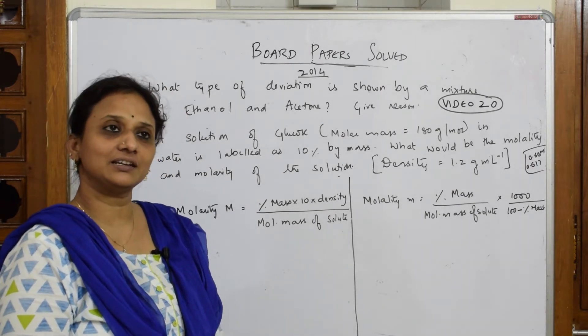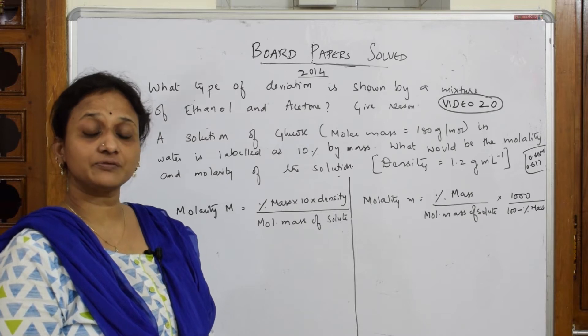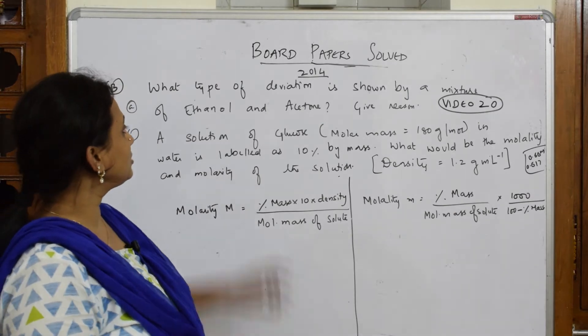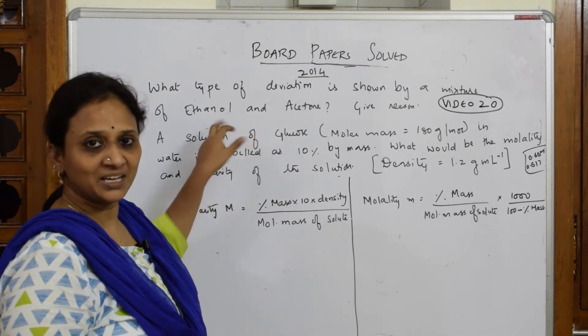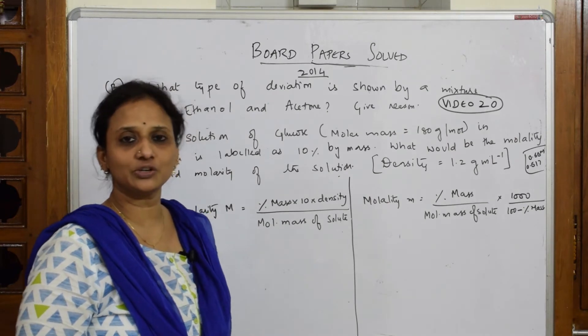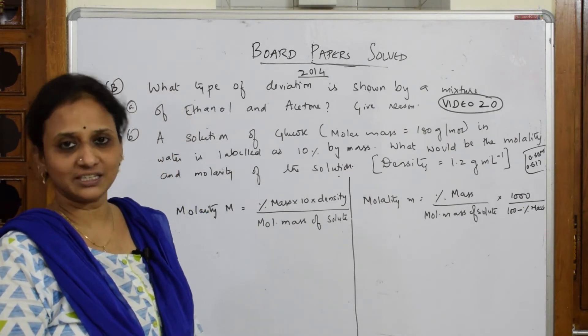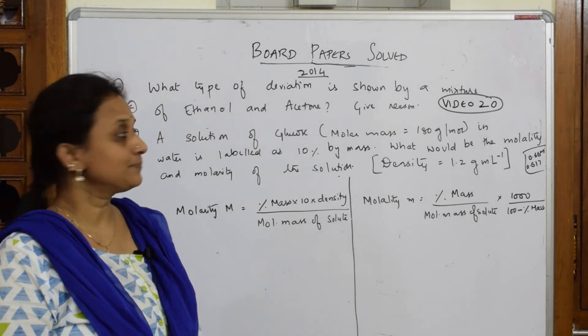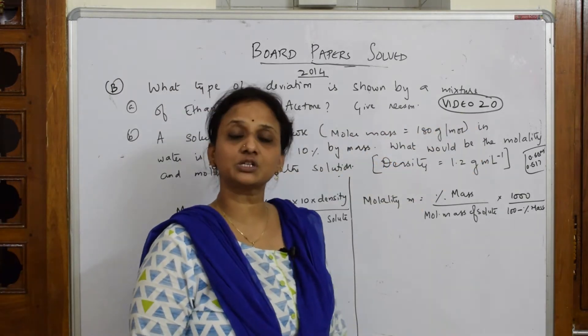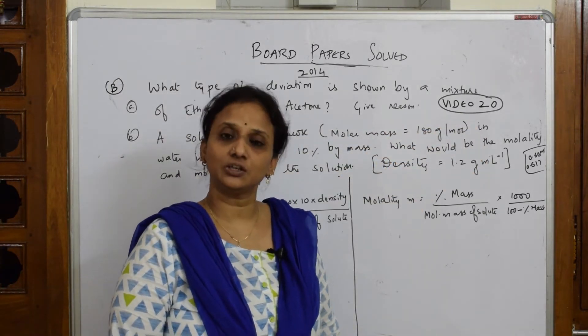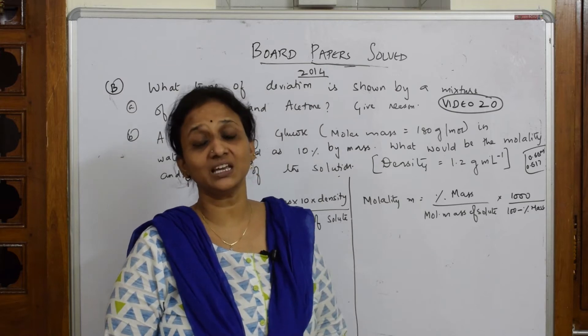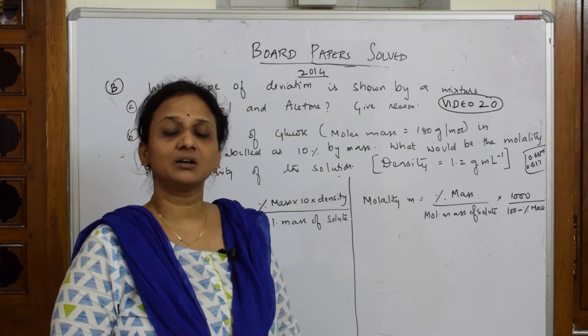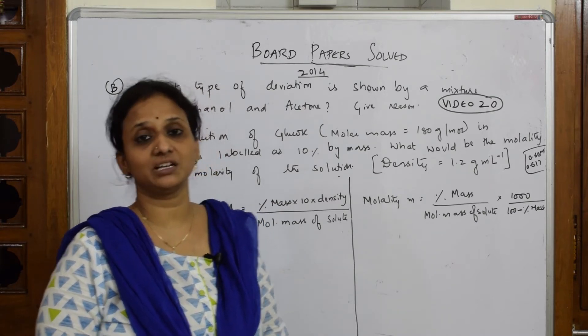Here basically I have done one video which is labeled as deviations from ideal behavior, that is positive deviation, negative deviation. When I speak about ethanol and acetone, you are finding hydrogen bonding in this. So when there is hydrogen bonding, we obviously know it's going to show a positive deviation because more amount of energy is required to break the hydrogen bonding. I've done one video which is numbered as video number 20, please watch that video. You will find a clear explanation of what type of deviation and why it is showing. I have labeled it as causes for deviation from ideal behavior, so please watch that.